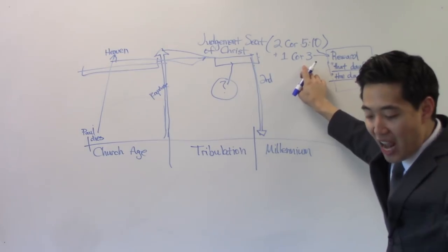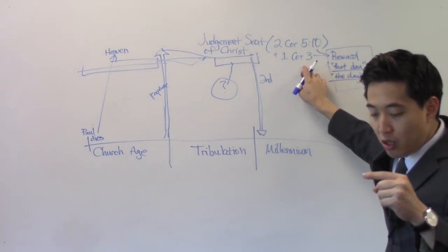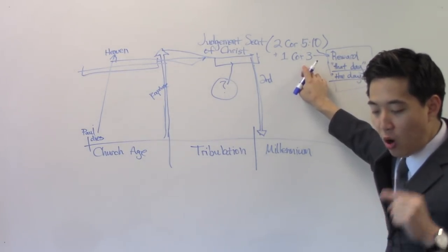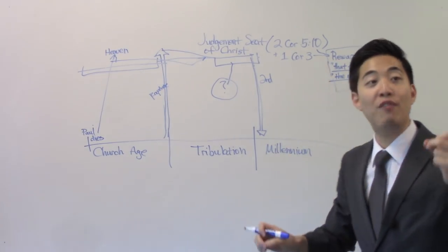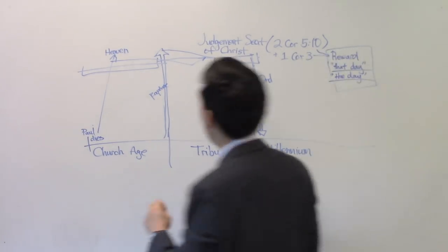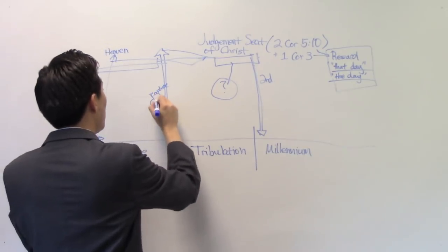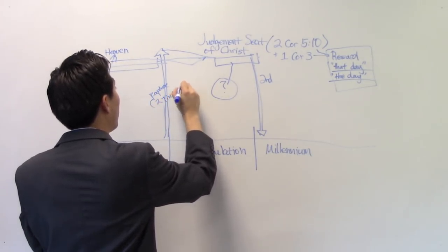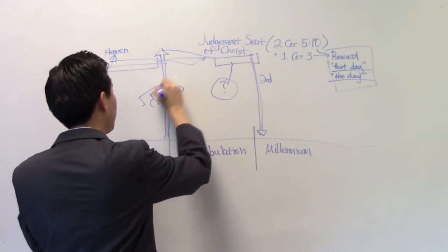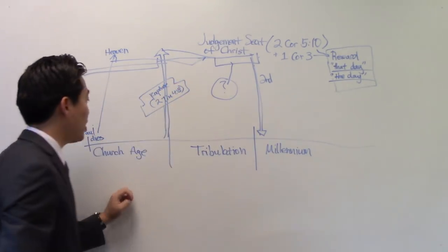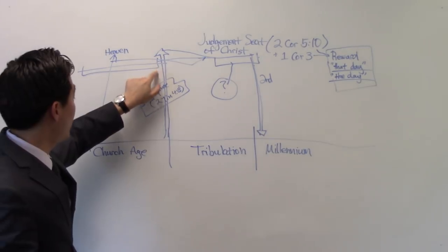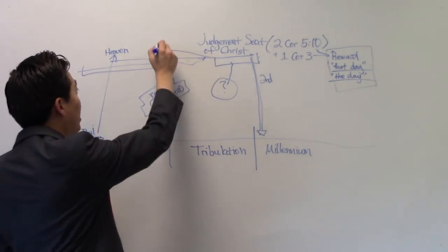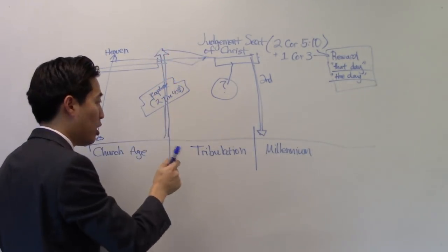Now, remember, what's known as the day in the Bible when Christians get rewarded and crowned? It's the judgment seat. But keep reading here. At that day, and what's in the context? And not to me only, but unto all them also that love his appearing. See? Rapture. So it seems like right here that 2 Timothy 4, verse 8, that the judgment seat of Christ starts when he appears and raptures us up to heaven.